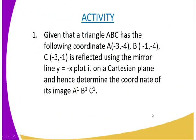Here is your assignment: Given that triangle ABC has coordinates A(−3, −4), B(−1, −4), and C(−3, −1), it is reflected using the mirror line y = −x. Plot it on a Cartesian plane and hence determine the coordinates of its image A', B', and C'.